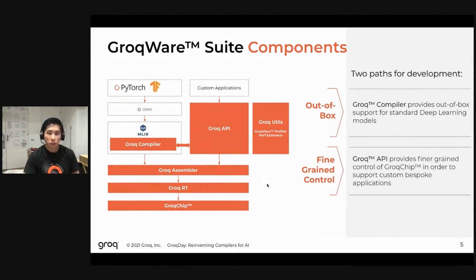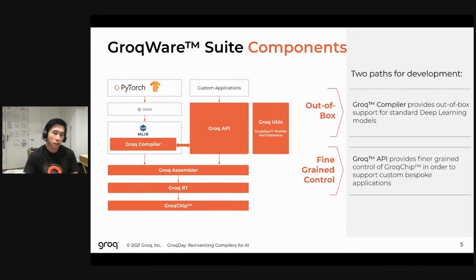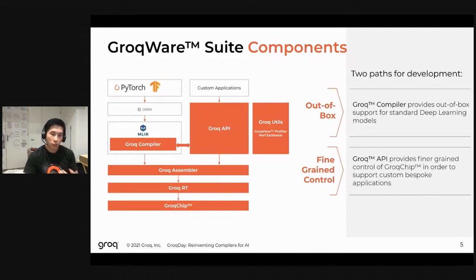Here's a high-level depiction of all these components working together. On the left-hand side you can see our Groq compilation flow, which takes a PyTorch or TensorFlow input, passes it into ONNX format, ingests it into our ONNX front end, processes it through our MLIR-based Groq compiler and scheduler, and outputs to our Groq assembler. That generates machine-level binary code, which is run through the Groq runtime and onto the Groq chip. In parallel, there's the Groq API flow for fine-grained control where PyTorch and TensorFlow are insufficient. For this presentation, we're focused on the Groq compilation flow.